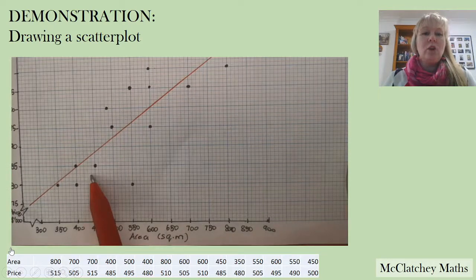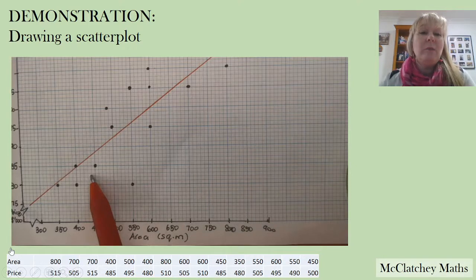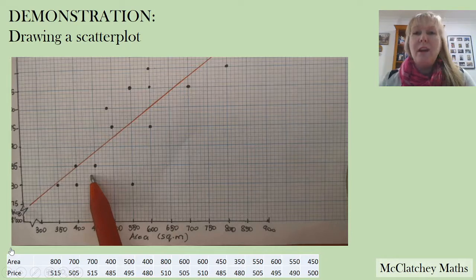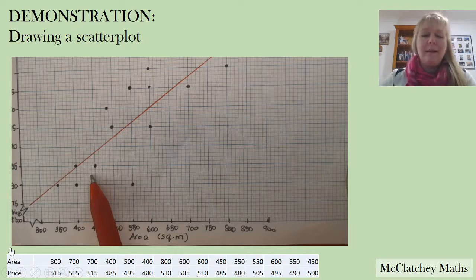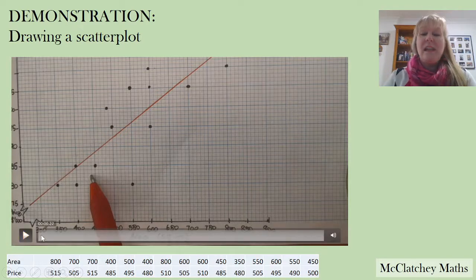There's the line of best fit. We're checking now — we've got five points above and six below. You can't quite see it but we've actually passed through some more points above where the camera cut it out. And that's how we draw a scatterplot.